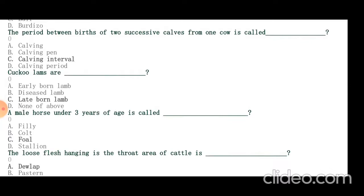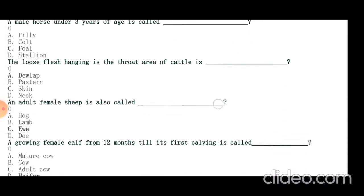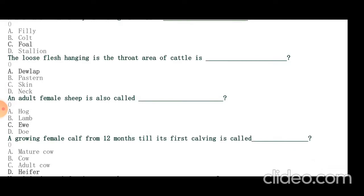An adult female sheep is called ewe and ram is the adult male sheep. Adult male goat is a buck.